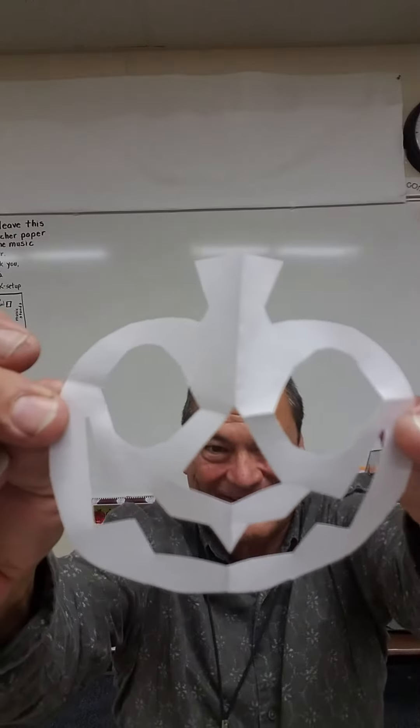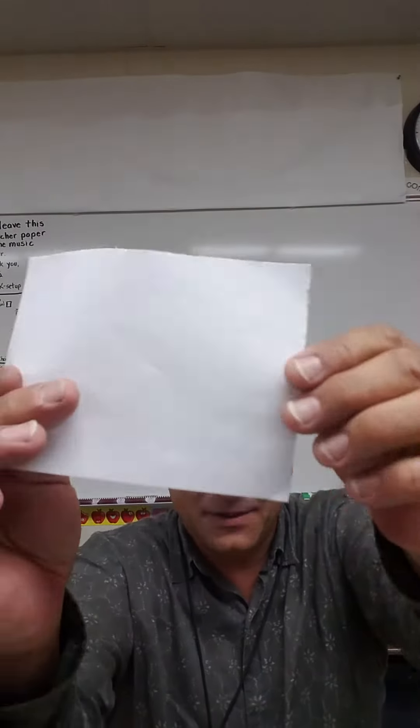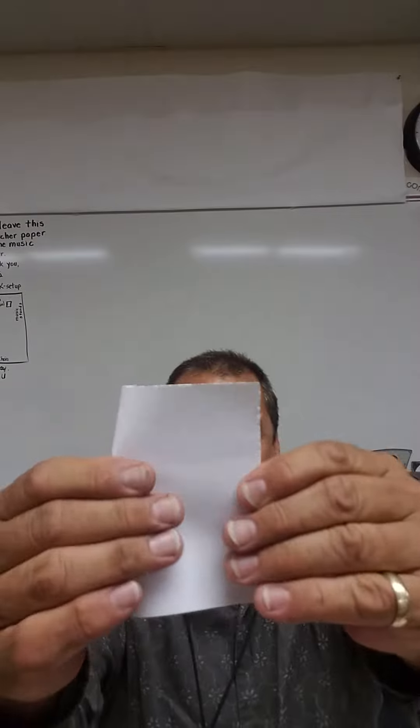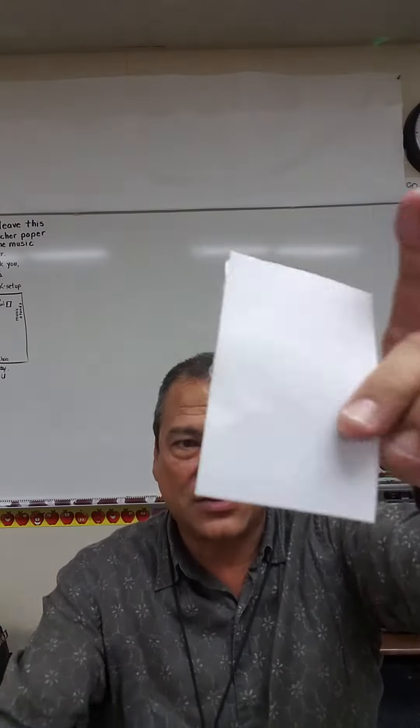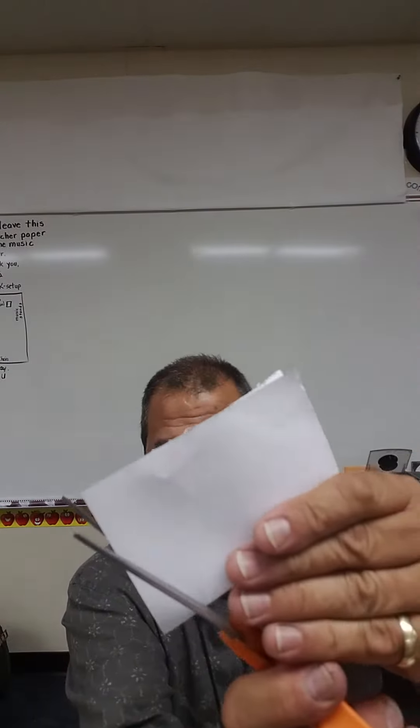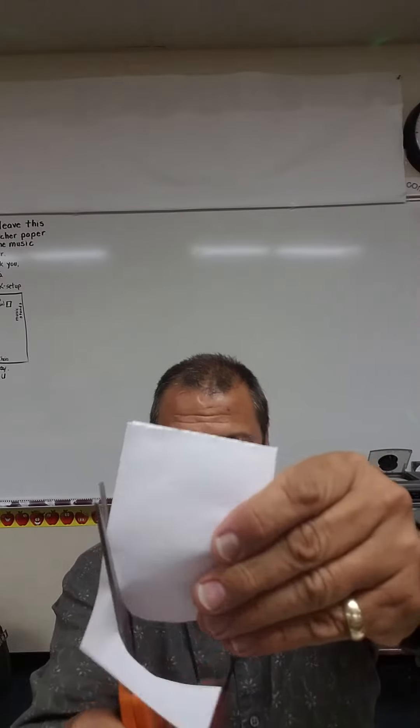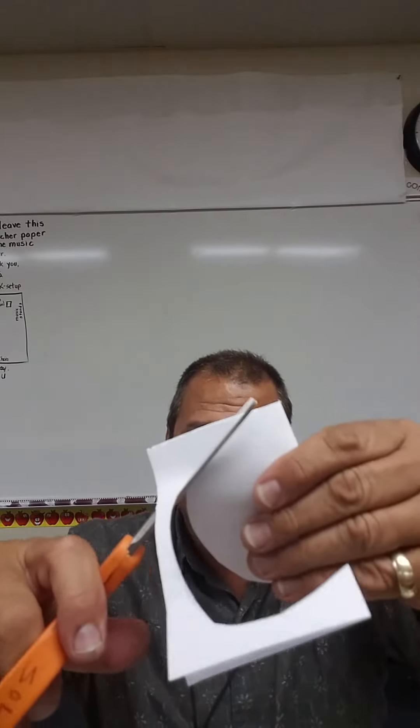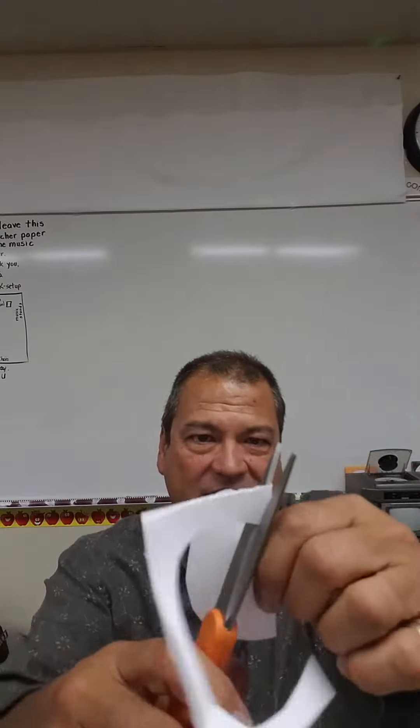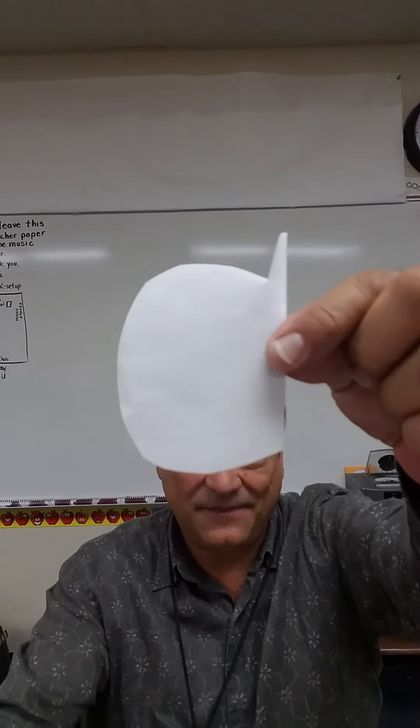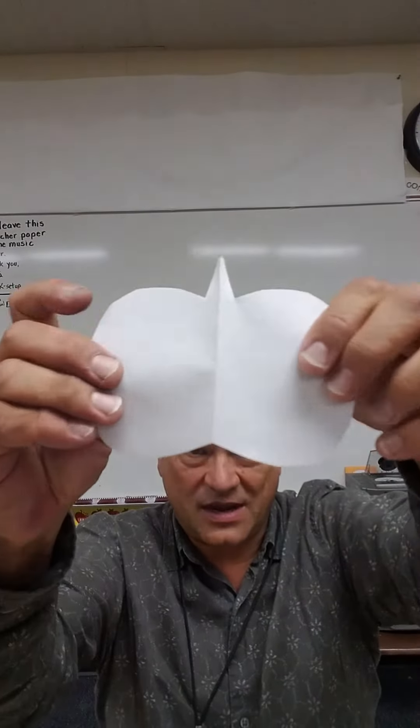Pretty cool, huh? All right, watch again. Take a paper, fold it in half. Once you do that, you're going to cut out a pumpkin shape like an apple in half. So it's going to be taking on the shape sort of like this. See? Then when you open it up, it's got a pumpkin shape.